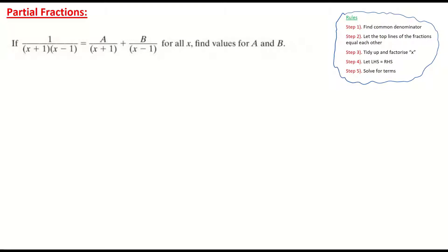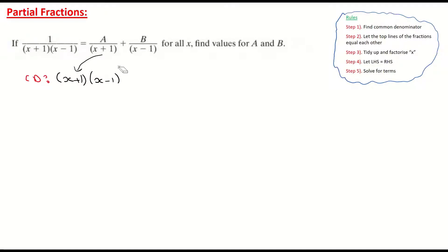The first step is to get your common denominator. You'll notice on these that your common denominator will always be found on the left hand side, so you can see what your common denominator is — it's basically given for us. It's when you multiply the denominators, which is your x plus 1 multiplied by the x take 1. So I'm basically multiplying the two denominators, and that's my common denominator.